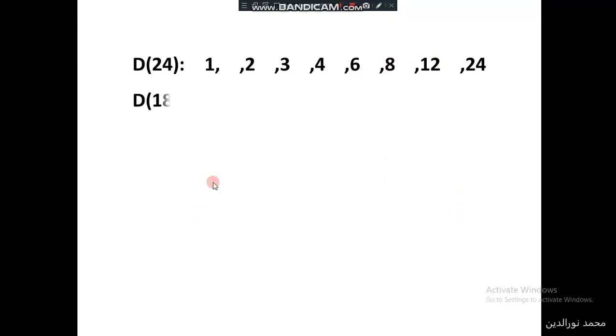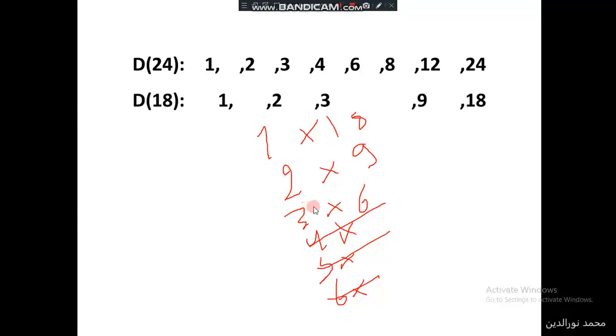Now we write the divisors of 18. They are 1 times 18, 2 times 9, 3 times 6. 4 times, it's not. 5 times, we cannot find a number that's multiplied by 5 and gives 18. 6 times, it's written here, so stop. Those are the divisors: 1, 18, 2, 9, 3, and 6.